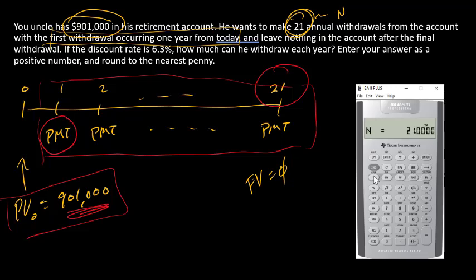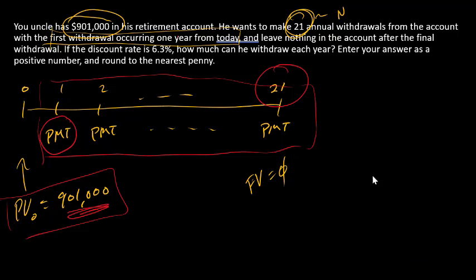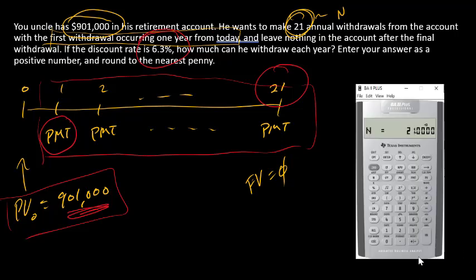I also know that 6.3% is the discount rate, so 6.3 goes into I. Zero is FV, there's nothing left over when all is done, and now I just need to compute the payment.